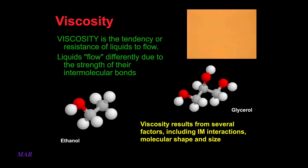Viscosity is referred to as the resistance of liquids to flow, and it's actually a complex subject. One of the many factors that influences the viscosity of a liquid is the intermolecular forces. In this video, we looked at ethanol in the lower left and glycerol in the middle right. If you look at the hydrogens connected to oxygens — oxygens are red — you can see that ethanol has one OH and glycerol has three OHs.